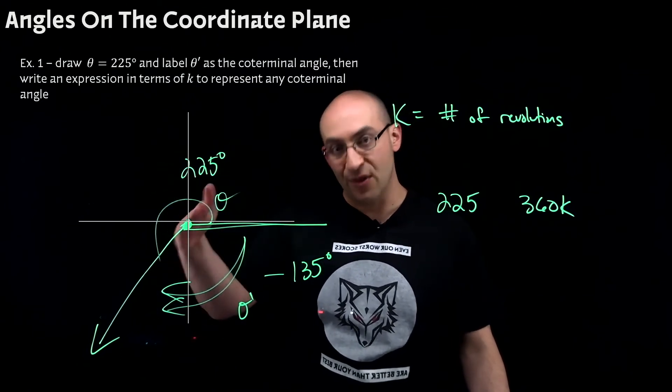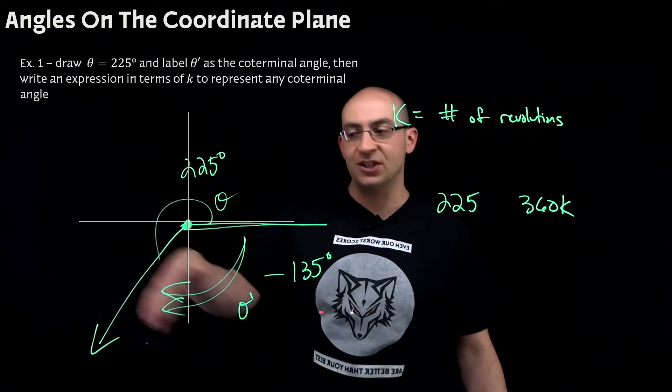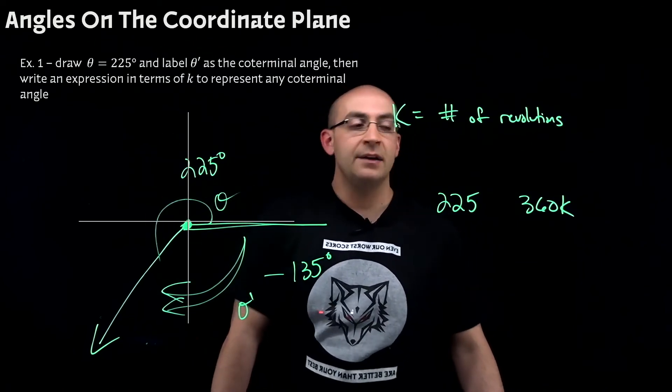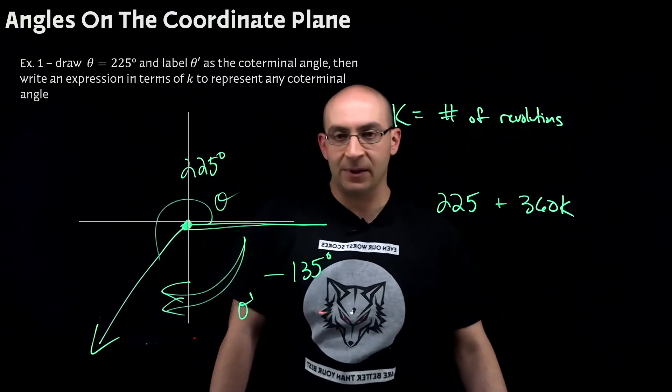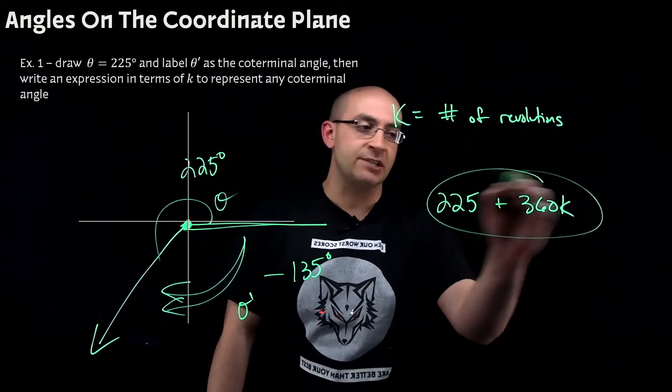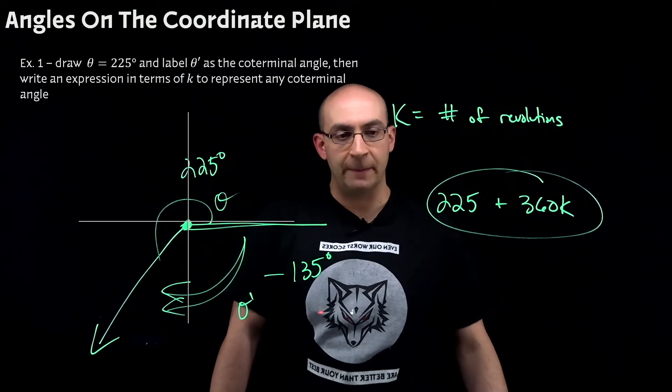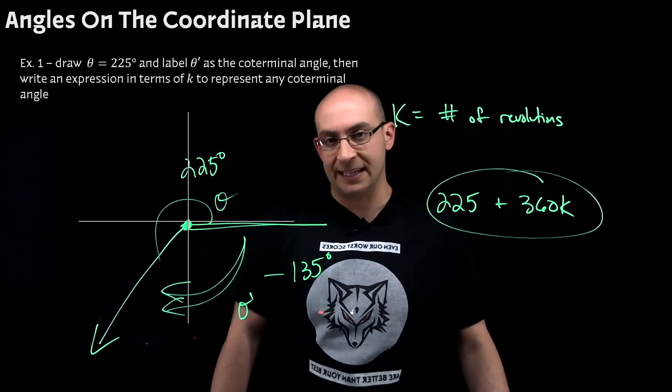but I would still end up on this line, right? Because I can just continue to make revolutions either one way or the other to get our values. Now, the link in between is going to be a plus sign. So, here is our expression to represent K revolutions to find the coterminal point. 225 plus 360K.